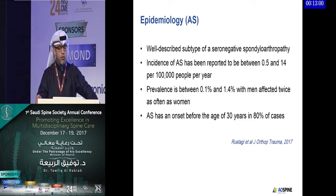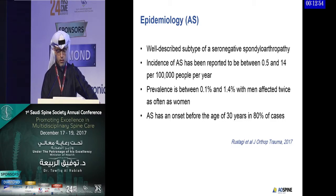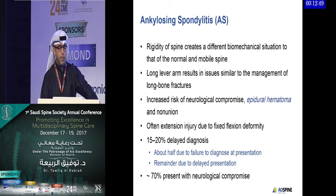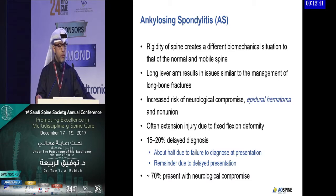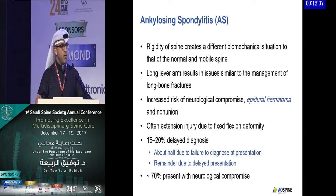Onset occurs before the age of 30 in more than 80 percent of cases. In contrast, DISH, which I'll elaborate on later, is more prevalent in the elderly population. What's peculiar about ankylosing spondylitis is that the rigidity of the spine creates different biomechanical situations compared to the normal mobile spine.